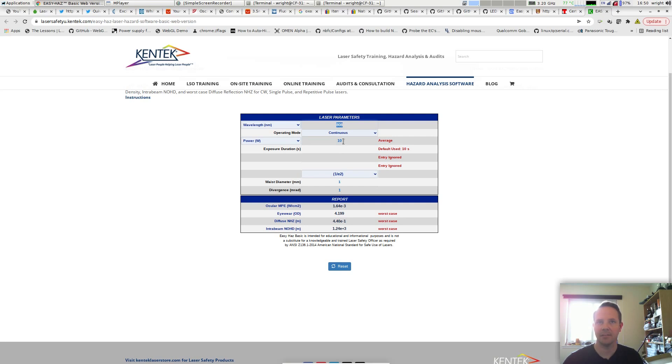We expect that the average power will be no greater than 10 watts, and it will calculate everything for you. So it says the ocular MPE, or maximum permissible exposure, is 1.64 times 10 to the minus 3 watts per square centimeter, which is 1.64 milliwatts. And it recommends an optical density of 4.199.